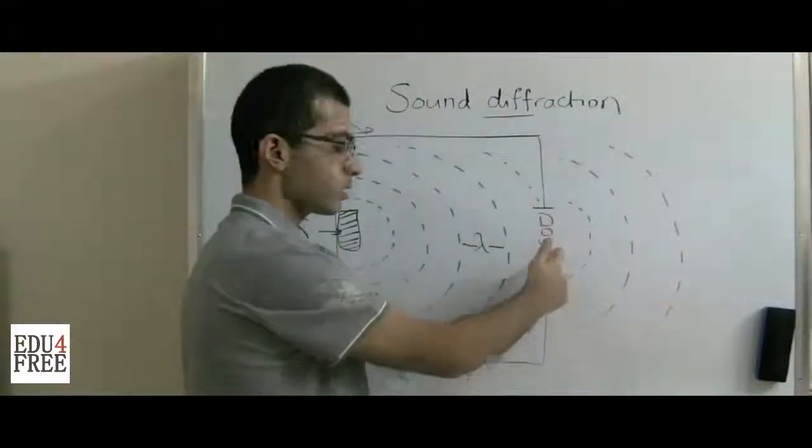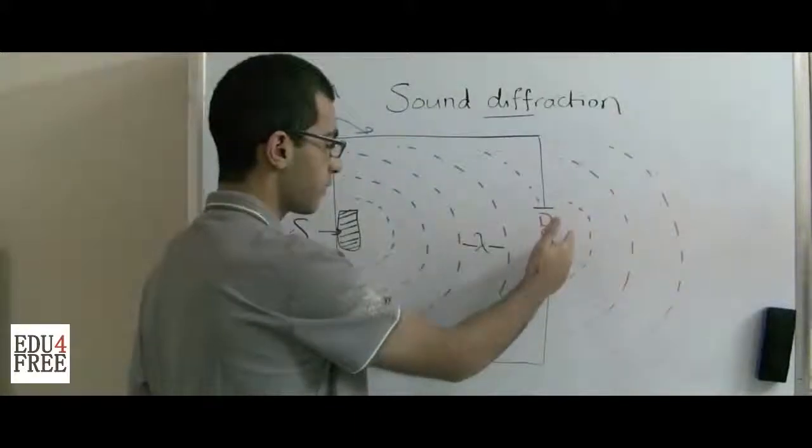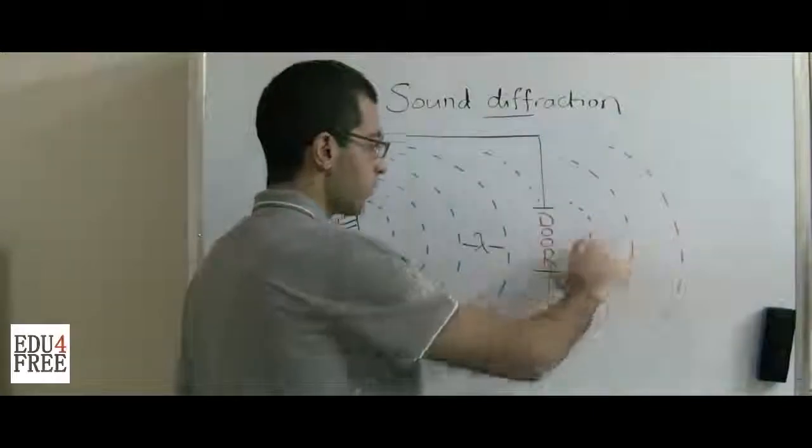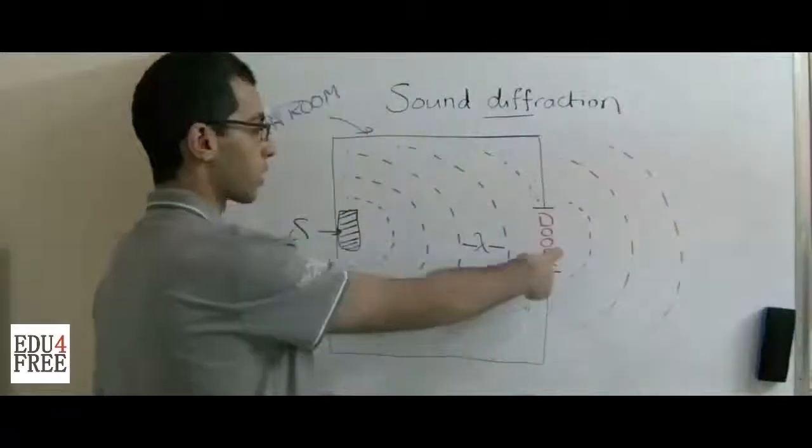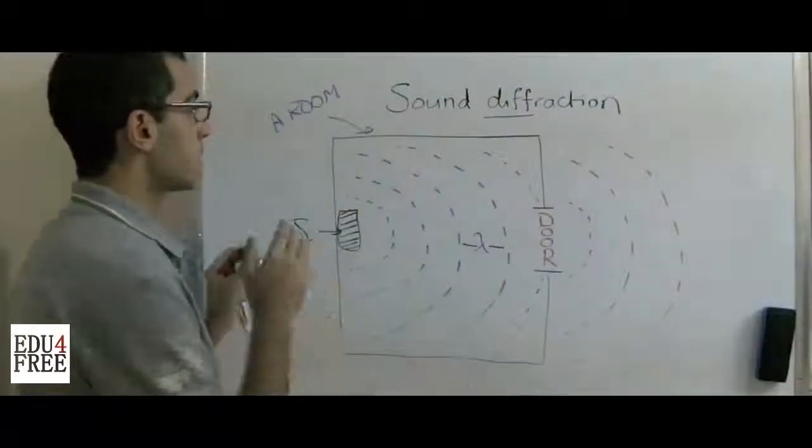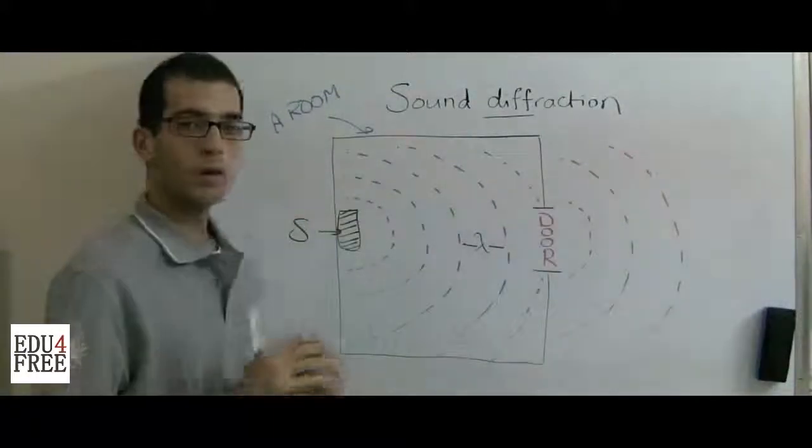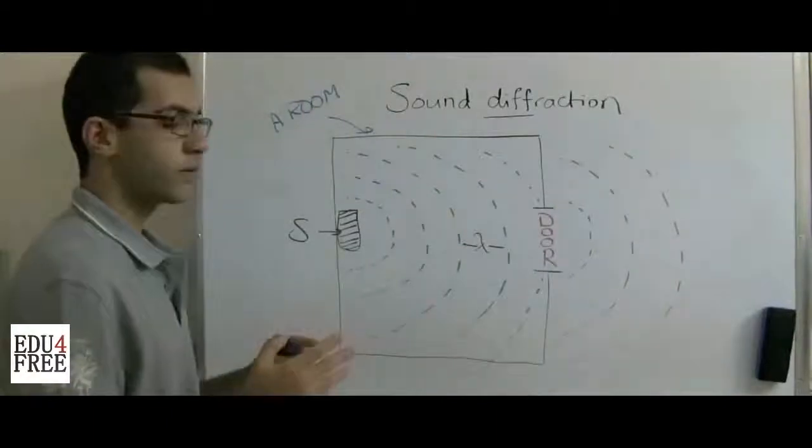The intensity of sound depends on the place where the person is standing. So it will be maximum if he is standing just straight in front of the door, and it will decrease if he moves away from the door. So that was sound diffraction.